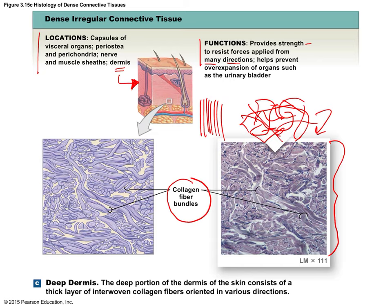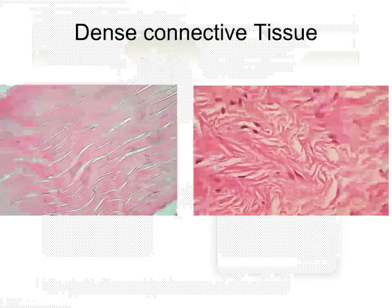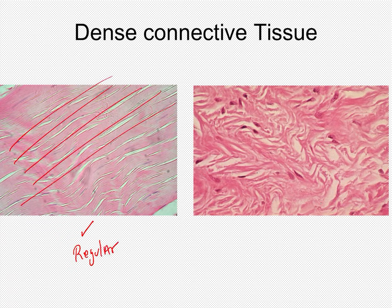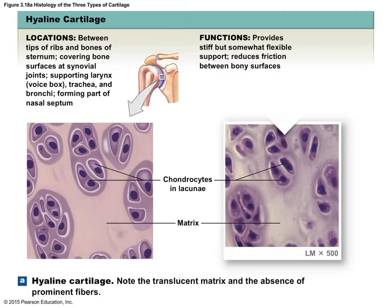The easiest place to remember for dense irregular CT is the dermis of the skin — the bottom layer. Think about how many directions your skin can be pushed and pulled when you move or get a massage; it bounces back from any direction. Other locations include capsules of visceral organs. Now, comparing the two histology images: dense regular has all collagen fibers running in one direction; dense irregular has fibers swirling in all directions.